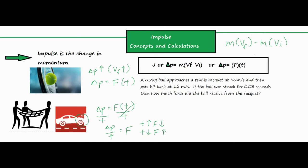The other way to increase impulse — one people typically wouldn't recognize as easily — is increasing the time of impact. With a tennis ball and strings, you can do this two ways. Number one is your form and technique: if you follow through in the direction you're hitting the ball, that increases the time of impact and increases the final velocity. Number two, which most people are unaware of, is stringing your racket more loosely. Loose strings create a trampoline effect, allowing the ball to sit on the strings longer, causing a greater impulse and therefore a greater final velocity.